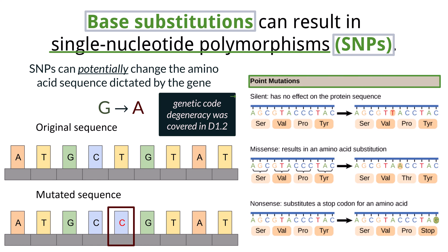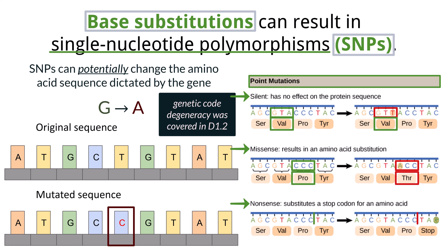These mutations can have one of three effects. A silent mutation changes the codon but not the amino acid, due to redundancy in the genetic code. A missense mutation changes one amino acid, which can alter protein function. A nonsense mutation changes a codon to a stop codon, ending translation early and often resulting in a non-functional protein.